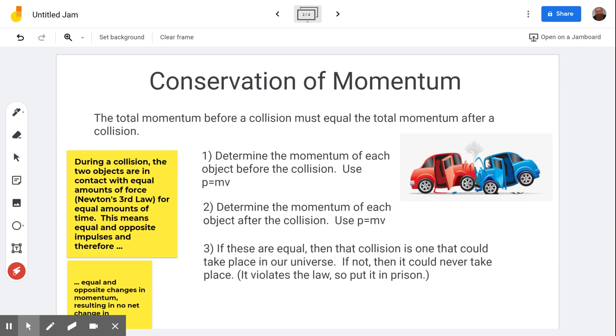Now, why is that true? It's true because during a collision, the two objects are in contact with equal amounts of force. Anytime two things touch each other, they're part of a single interaction that has equal and opposite forces, Newton's third law, for equal amounts of time. That means that you can't start touching something else until it's touching you and you can't stop touching it until it stops touching you.